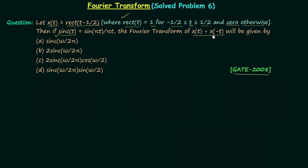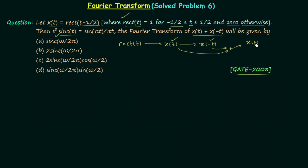The important task is obtaining the waveforms of x(t) and x(−t). We obtain x(t) = rect(t − 1/2) by first drawing rect(t) and then applying a time-shifting operation. Next, we apply time reversal to get x(−t). We then add x(t) and x(−t) to get x(t) + x(−t), and from that resultant waveform we obtain the Fourier transform. Let y(t) = x(t) + x(−t) and its Fourier transform Y(ω).